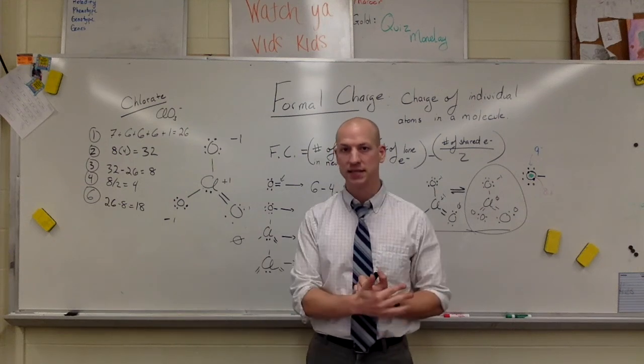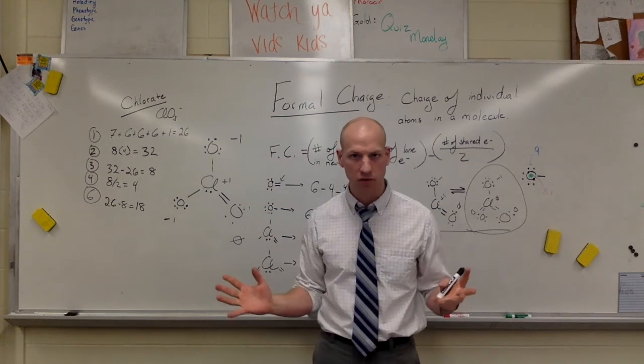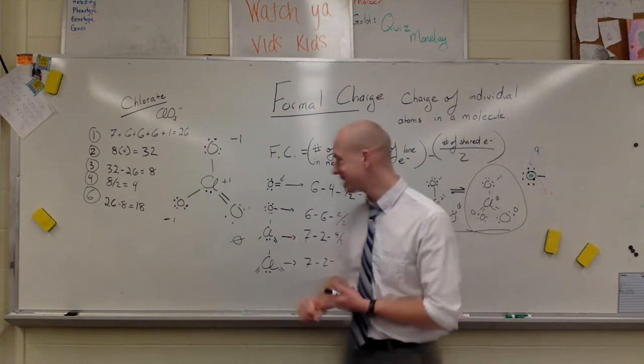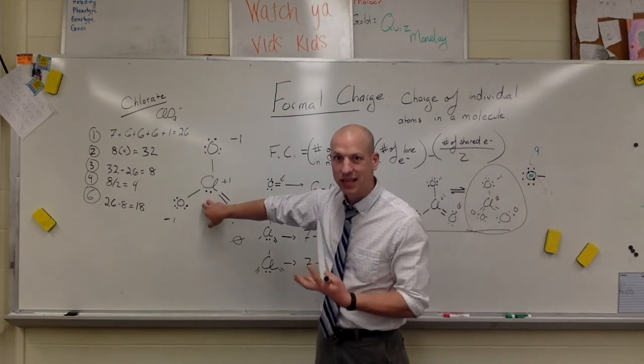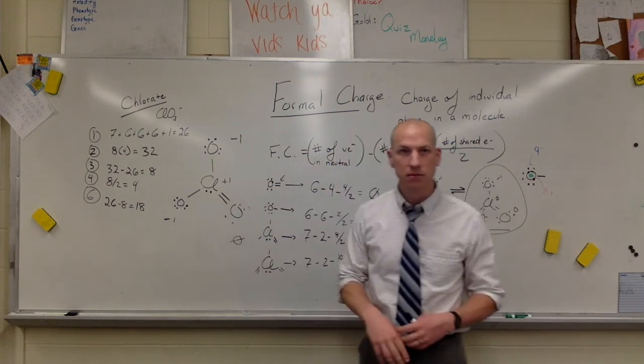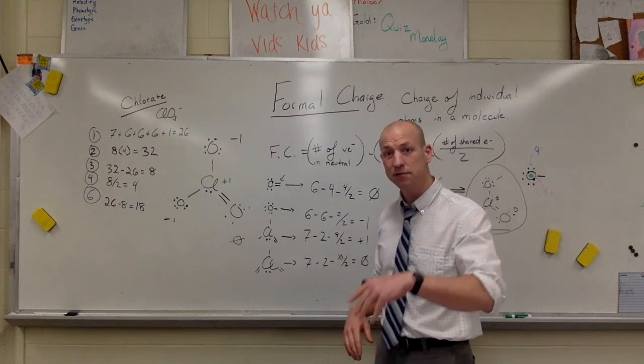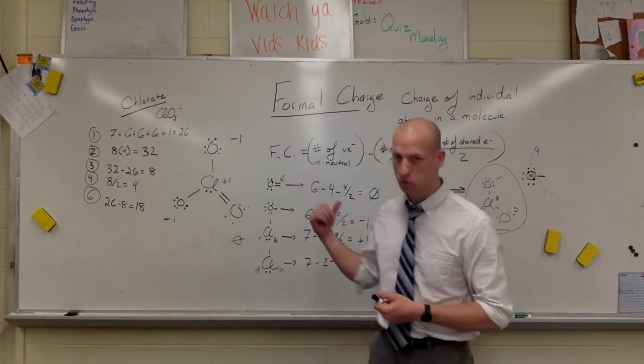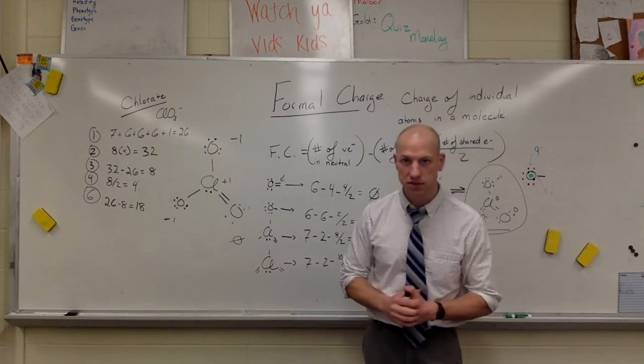The second case is if we have something that can form more than four bonds. And anything smaller than silicon will never form more than four bonds. So if you're talking about carbon or oxygen, in this case, chlorine shouldn't really technically form more than four bonds. But again, we're talking about a polyatomic ion. So anything of silicon and above, try formal charge. Any of the polyatomic ions use formal charge. I hope this clears some things up.